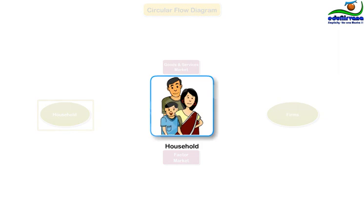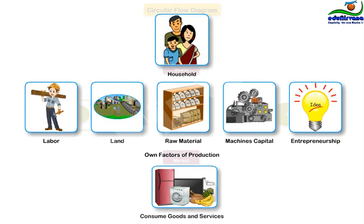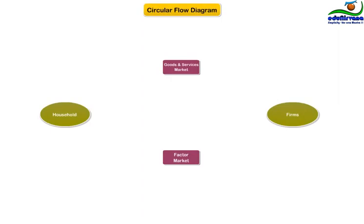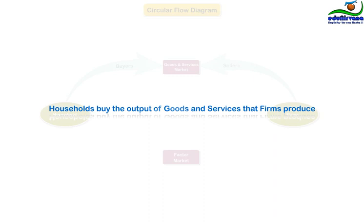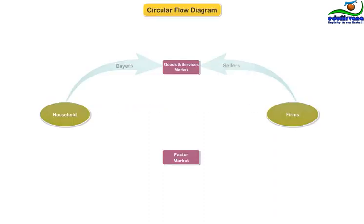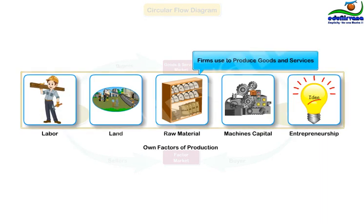Households, both standalone and extended, own the factors of production and consume all the goods and services that the firms produce. In the markets for goods and services, households are buyers and firms are sellers. In the markets for the factors of production, households are sellers and firms are buyers. In these markets, households provide firms the inputs that the firms use to produce goods and services.